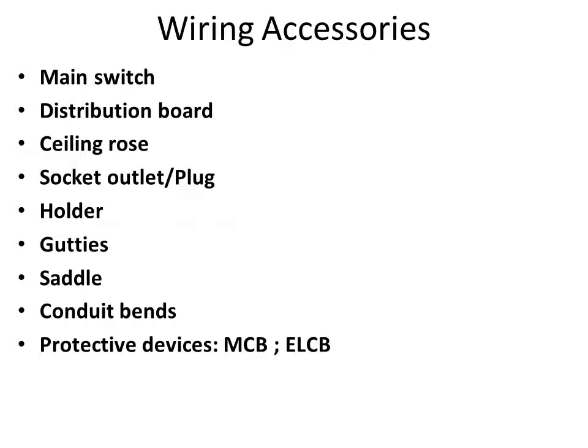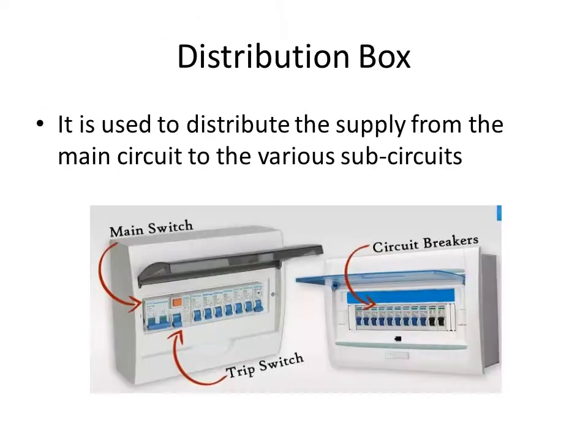Wiring accessories include: main switch, distribution board, ceiling rose, socket outlet, plug, holders, saddle, conduit bends, and protective devices MCB and ELCB. The distribution board contains a number of MCBs used to distribute the supply from the main circuit to various sub-circuits.